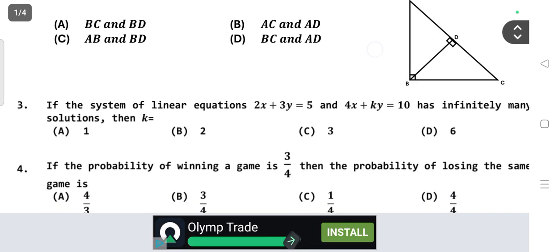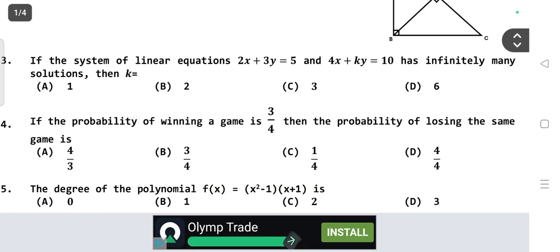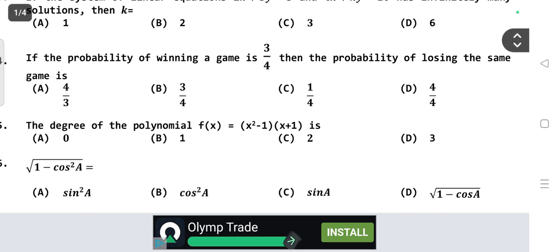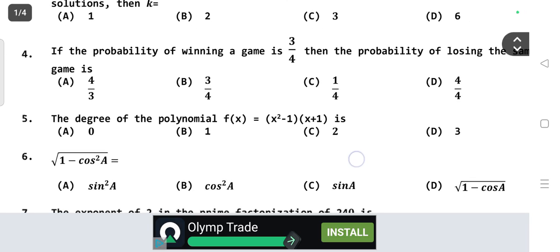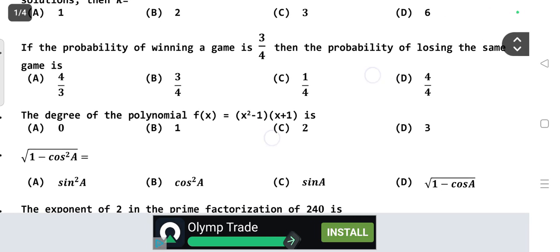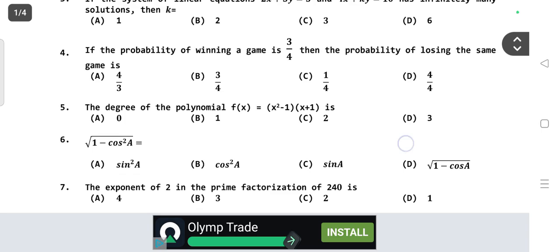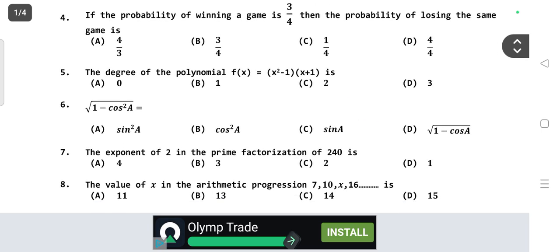Question number three: If the system of linear equations 2x plus 3y equals 5 and 4x plus ky equals 10 has infinitely many solutions, then k value is equal to? If the probability of winning a game is 3 by 4, then the probability of losing the game is?